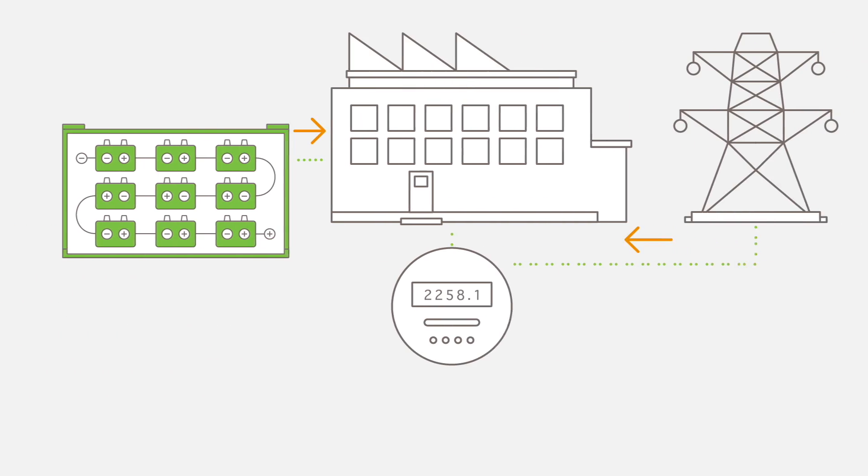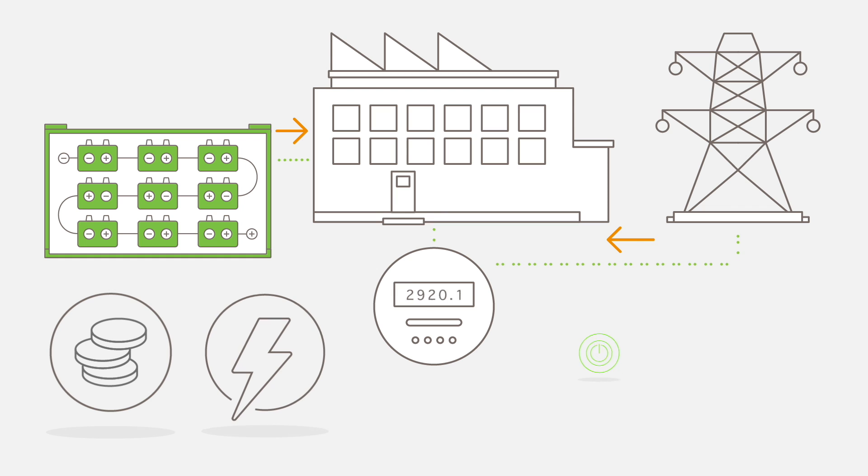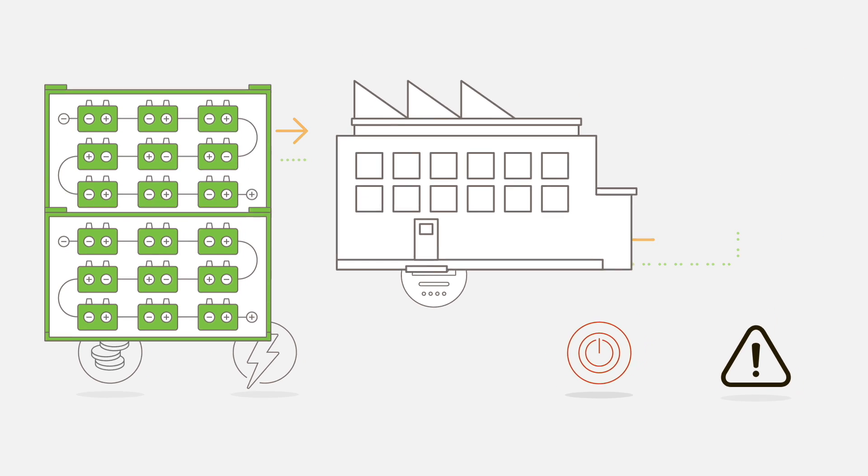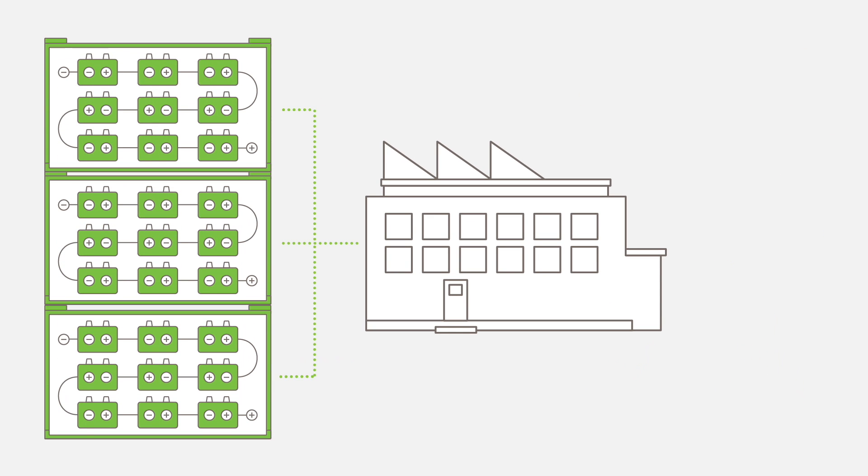For commercial and industrial customers who are dealing with high energy bills and electricity supply outages, we can offer solutions which will improve system reliability and reduce overall energy costs. The customer can achieve these benefits by installing a battery which can perform functions such as peak shifting and black start.